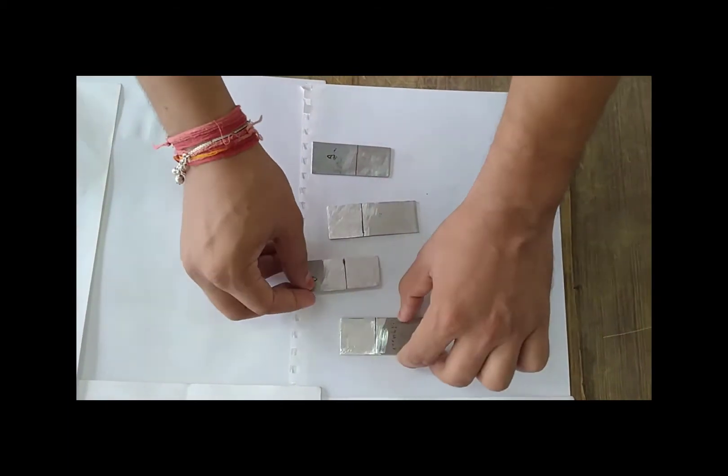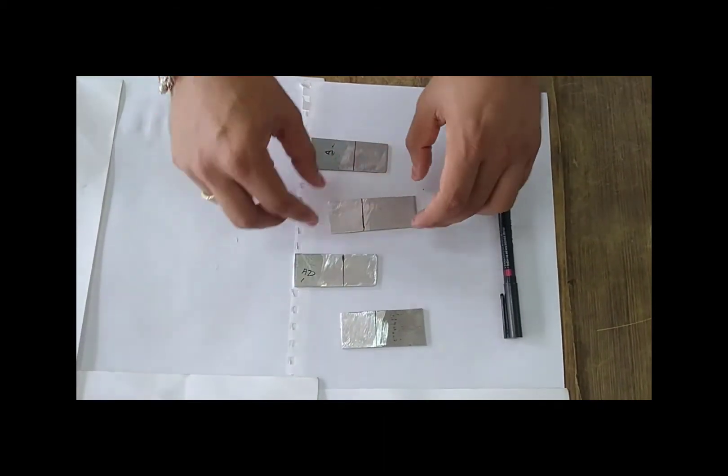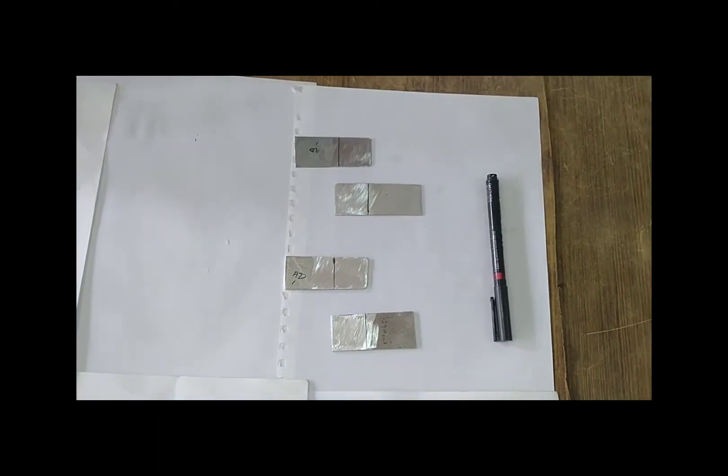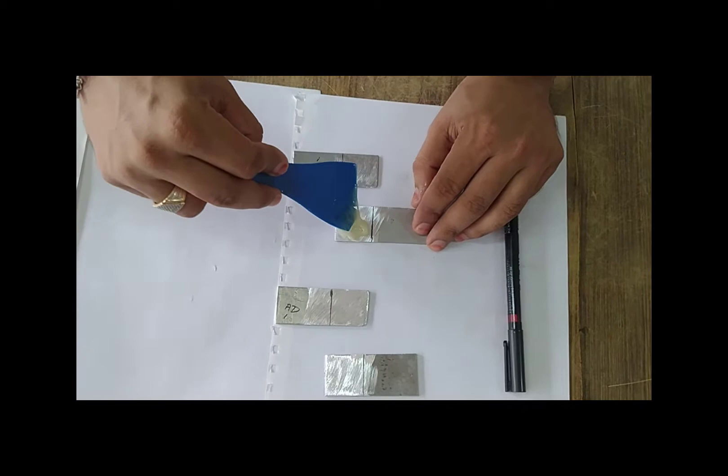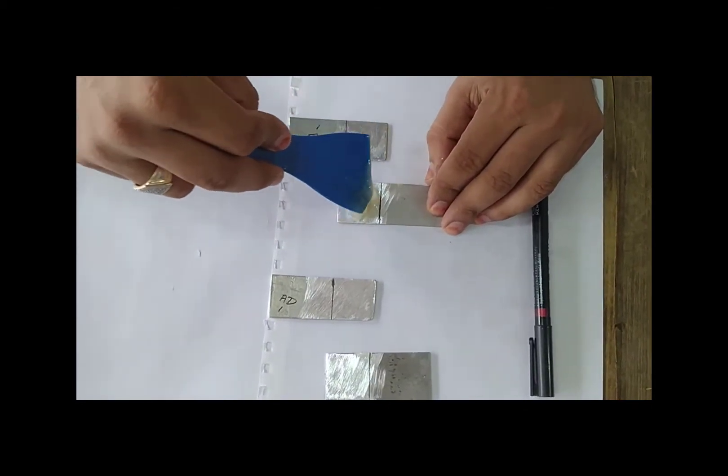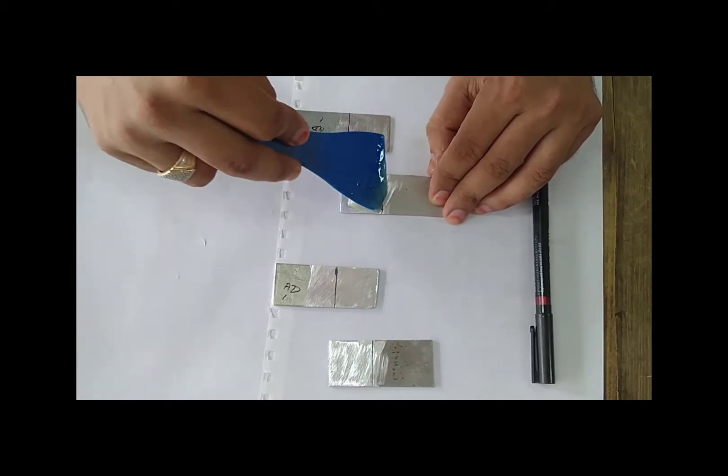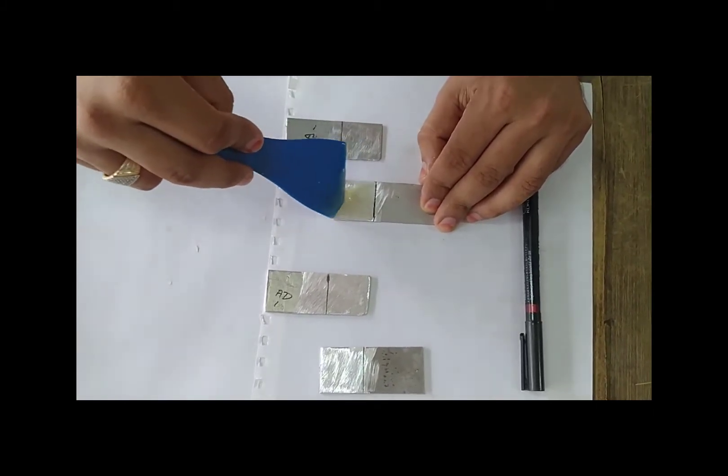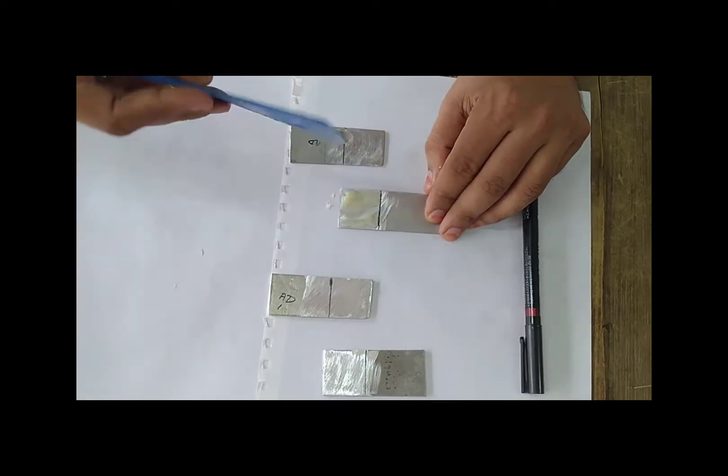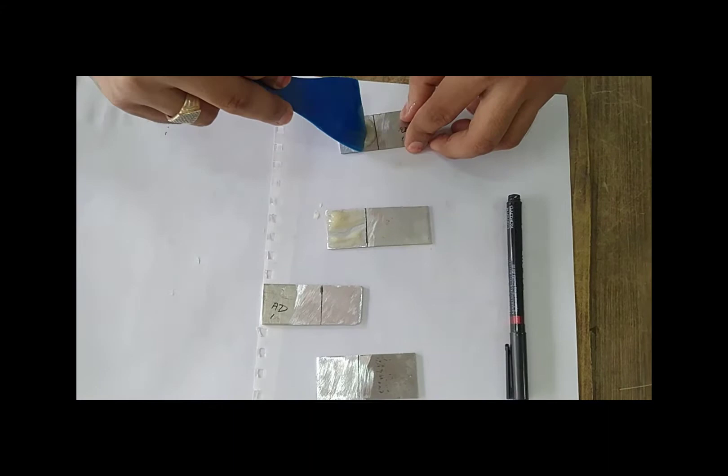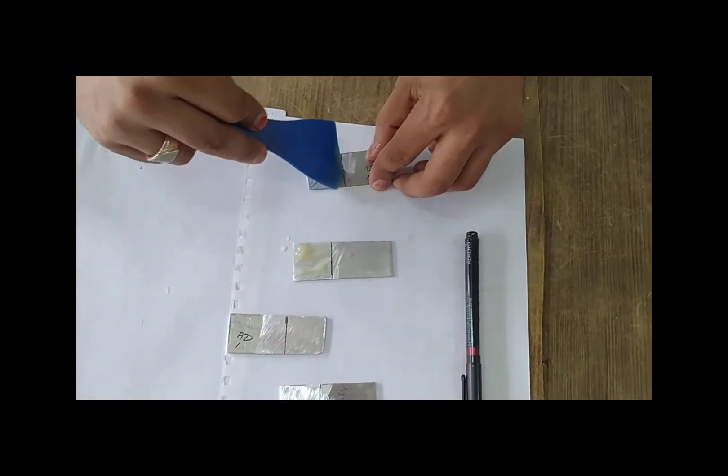This is the sheet composition. Now we can apply the adhesive over that with a uniform thickness, assuming like 1mm thickness to be applied. It should be applied uniformly on both the sheets to be joined. The adhesive is applied on both sheets and should be spread uniformly.